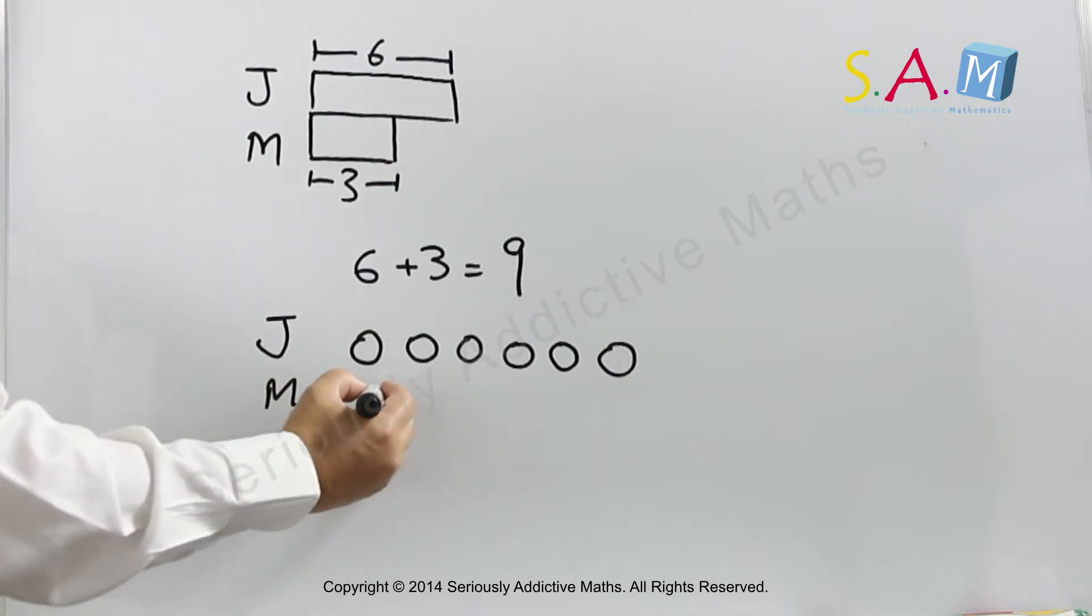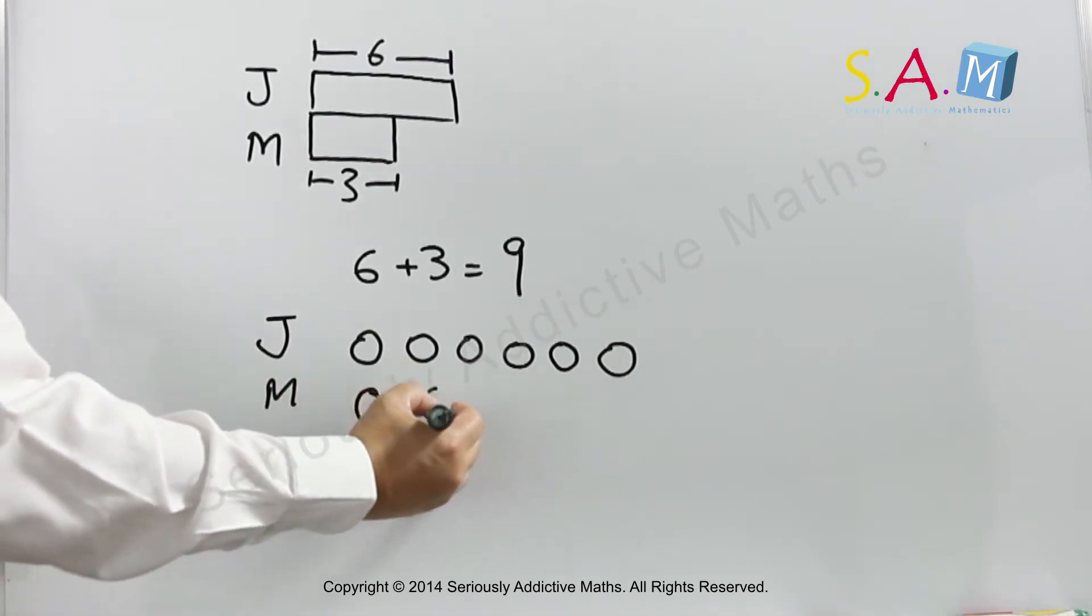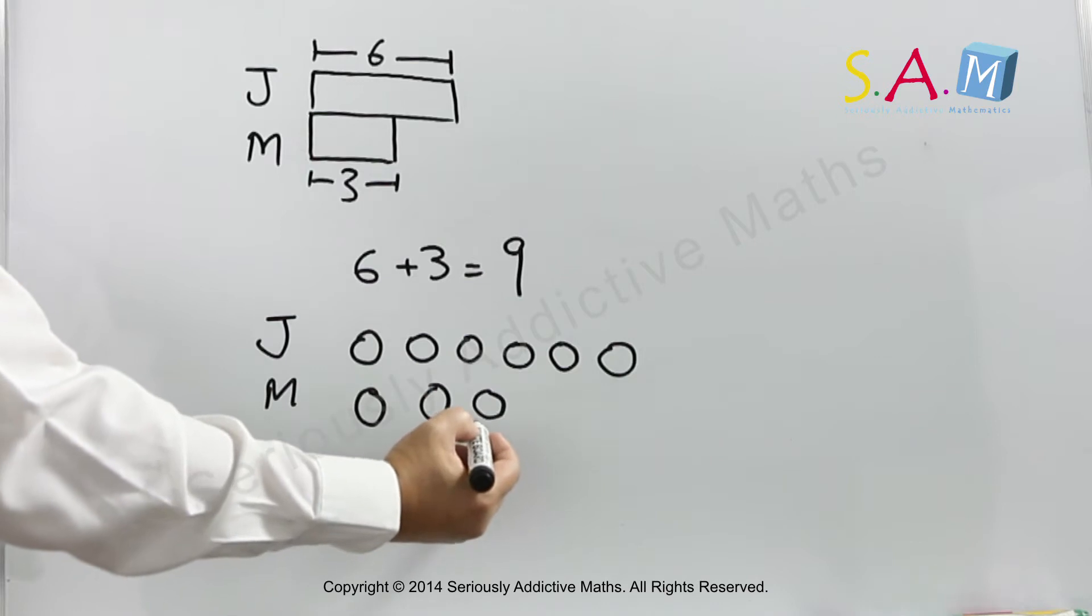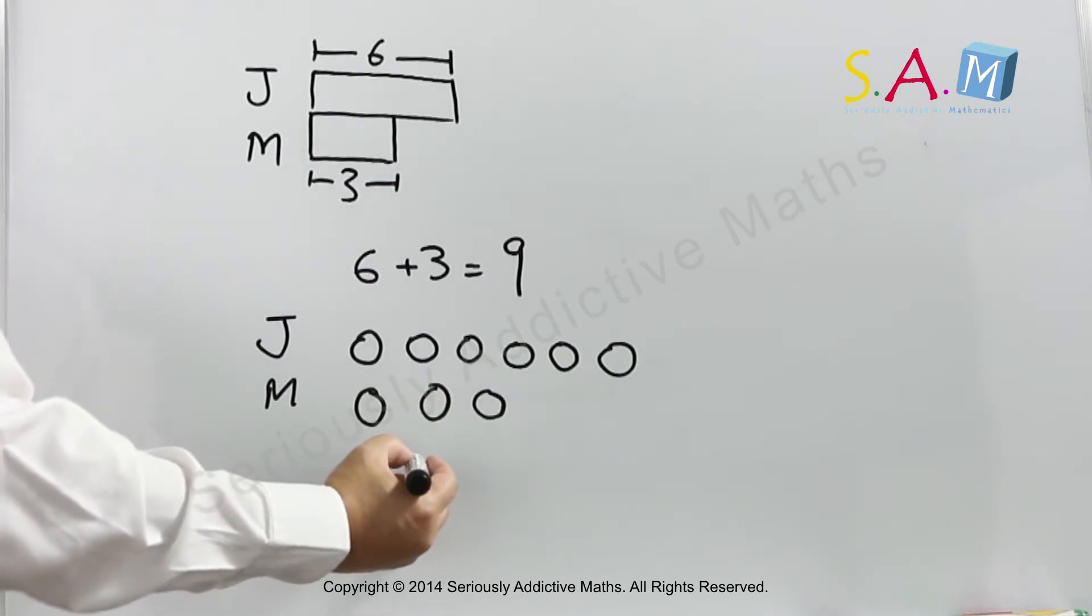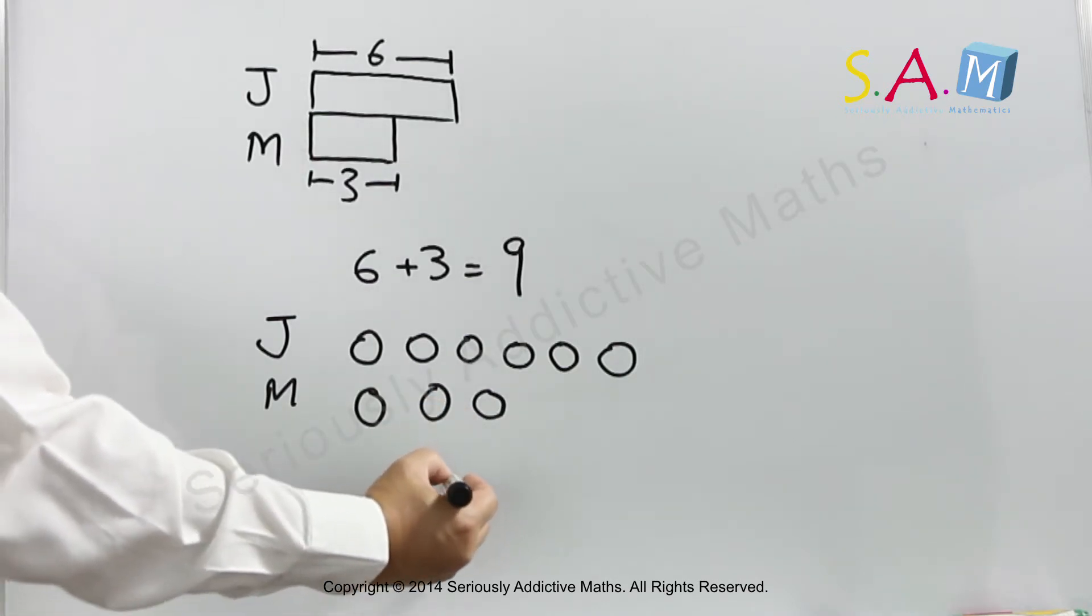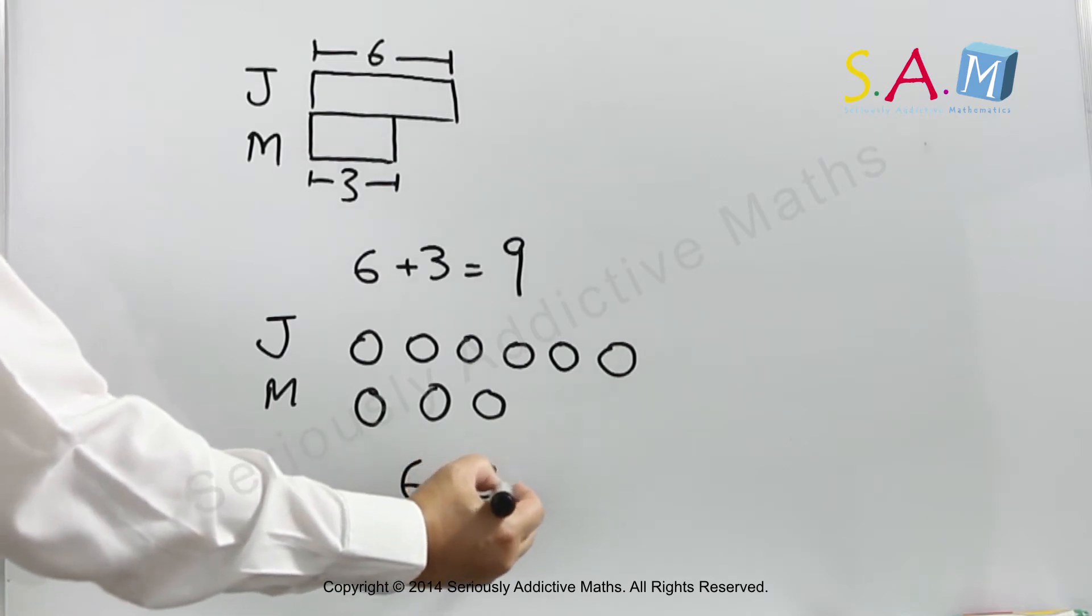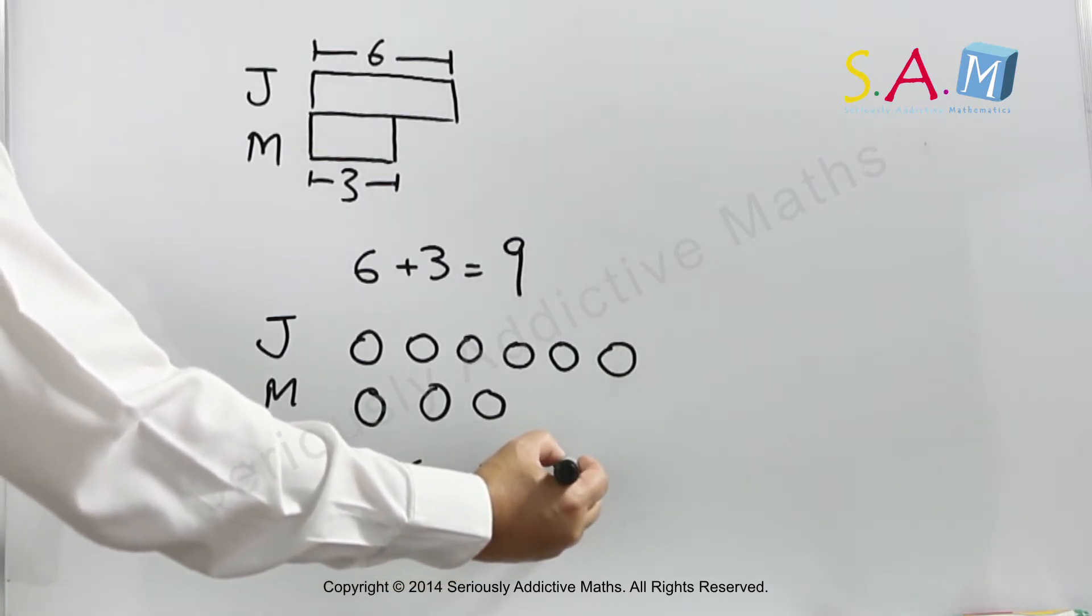And Mary would have three marbles: one, two, three. So we can see that we can put six plus three, a total of nine marbles.